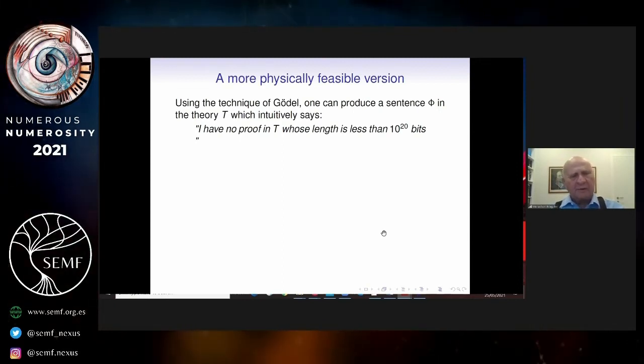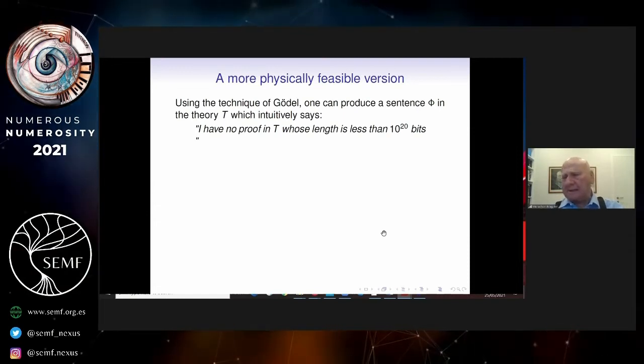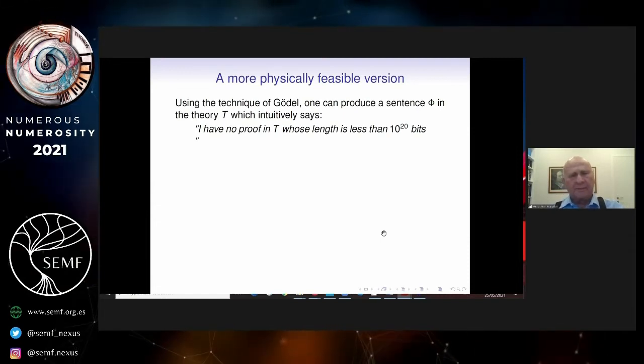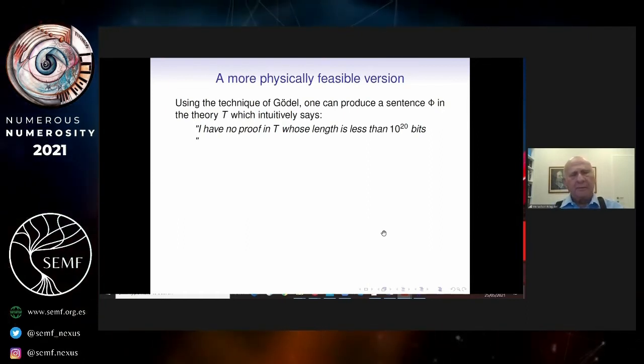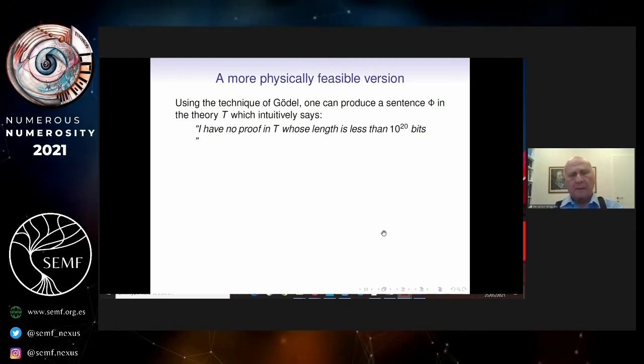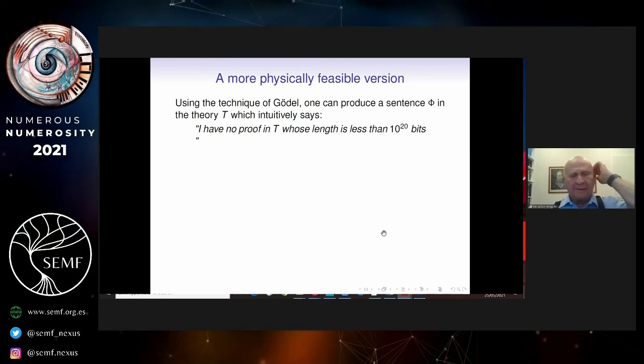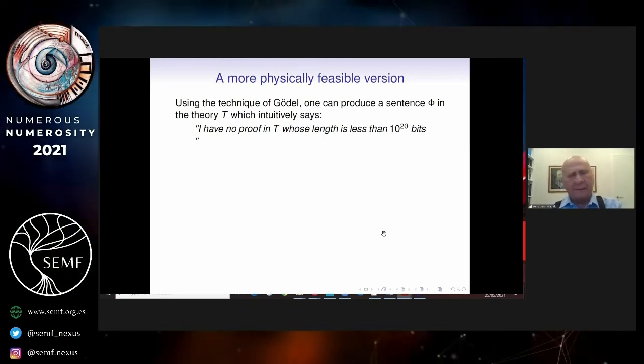But let's look at a little bit more sophisticated example. Using the same technique as the proof of Gödel's incompleteness theorem, you can produce a sentence in theory T, which intuitively says, I have no proof in T whose length is less than, let's say, 10 to the 20 bits.